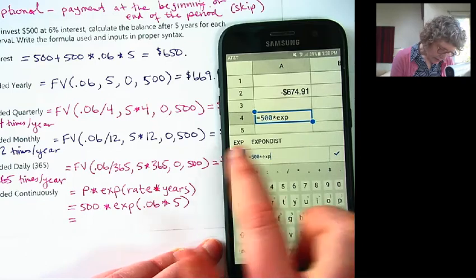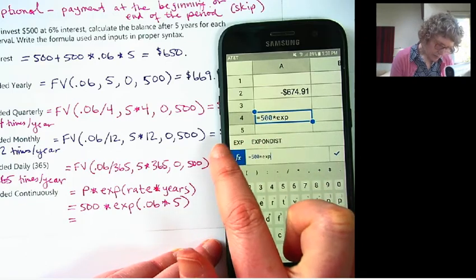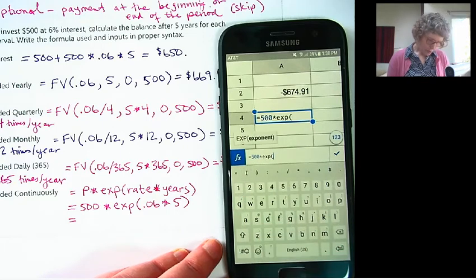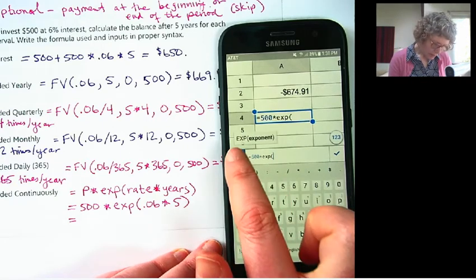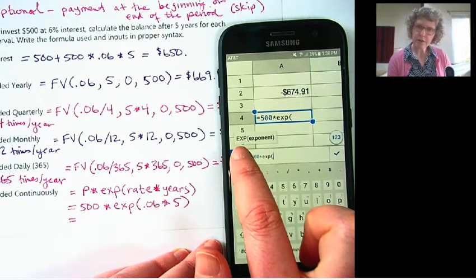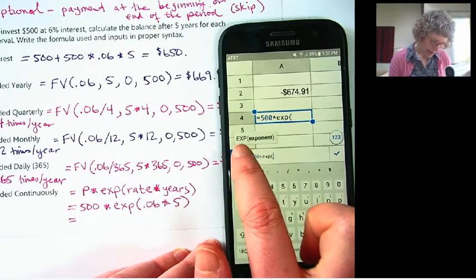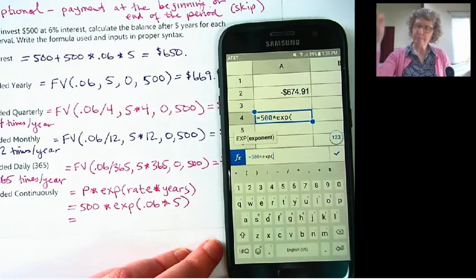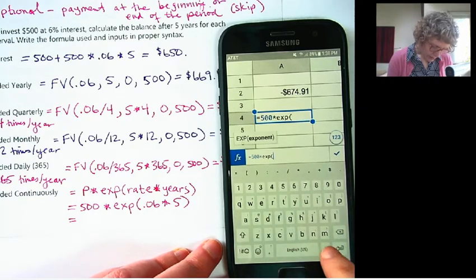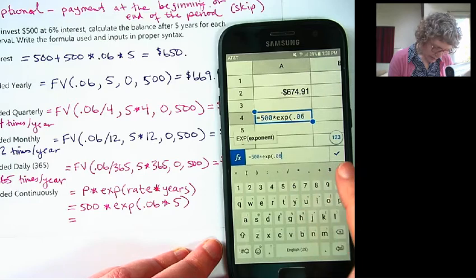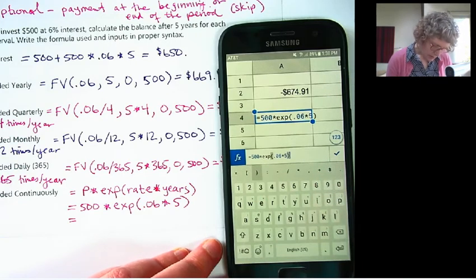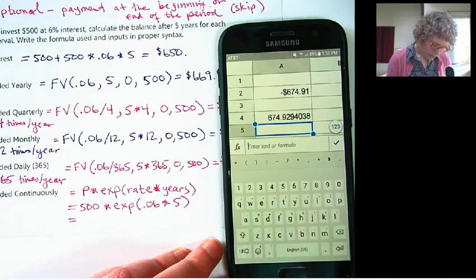equals 500 times e x p. And you can notice it's giving some possible functions that I might want to use here. When I open it, it shows me, it verifies, that is a function that the spreadsheet has, and its input is the exponent. So it was e to the power. So our exponent is .06 times 5. It's rt. Close it up. Hit enter.